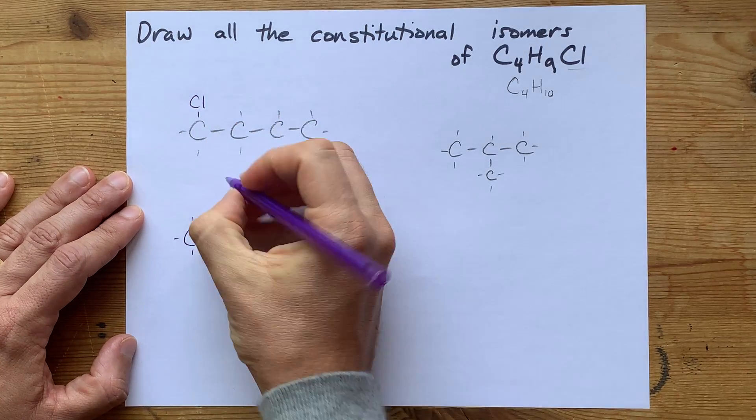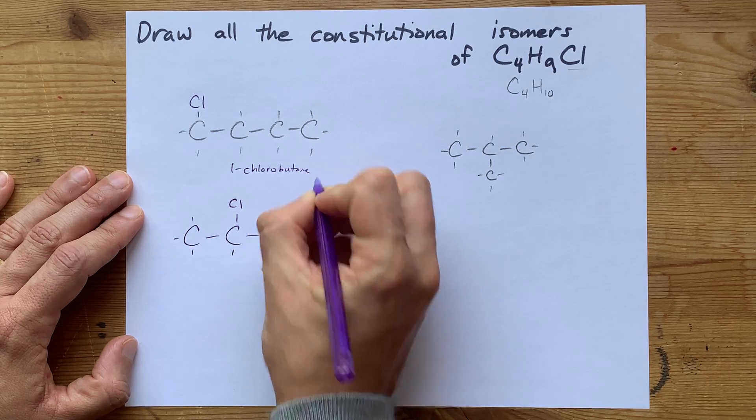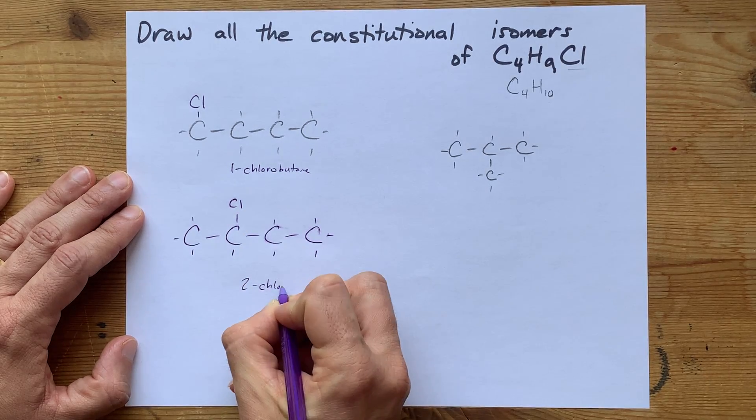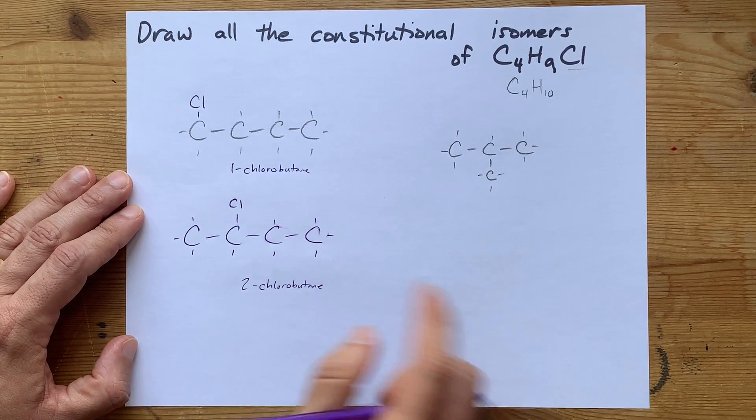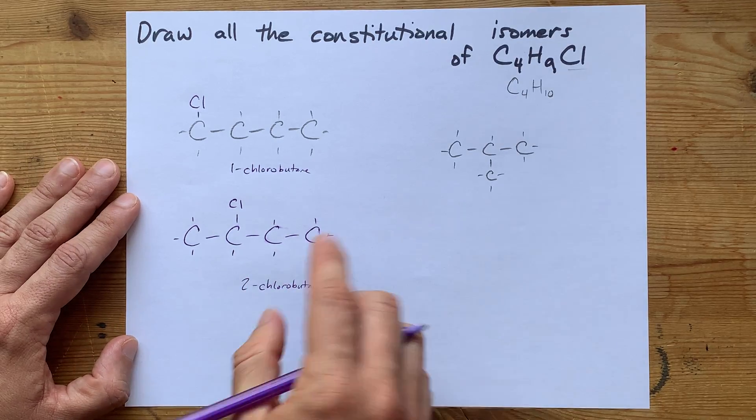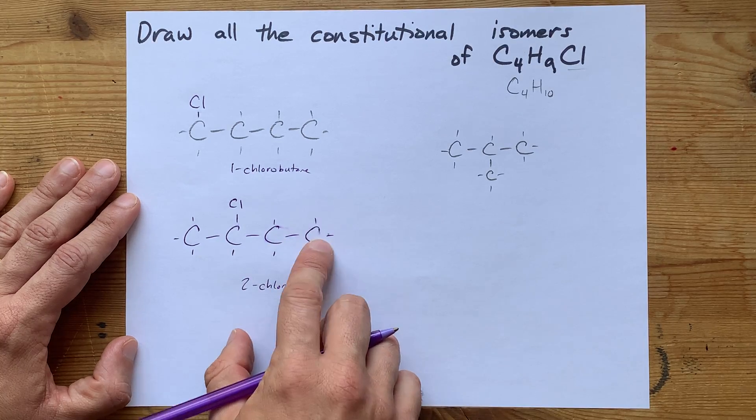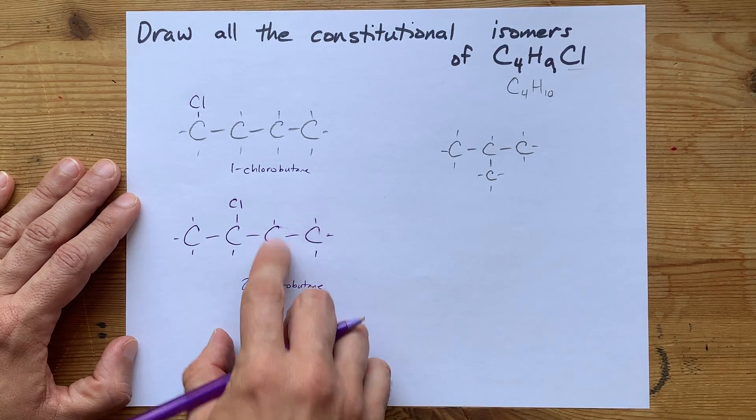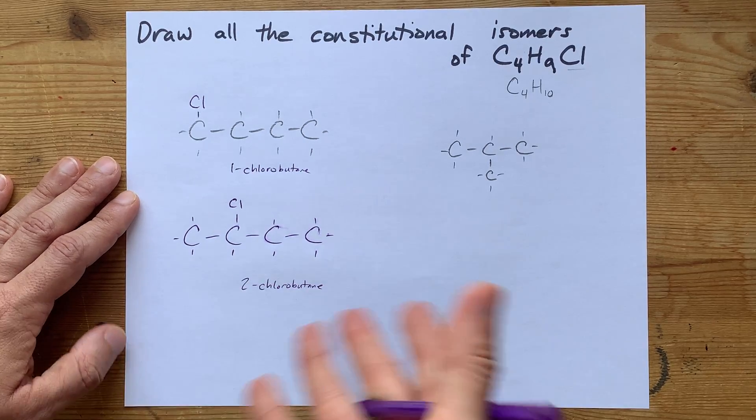Now these two are very different from each other. One of them is 1-chlorobutane and the other one is 2-chlorobutane. What about 3-chlorobutane, you ask? Well, if I put the Cl here on this carbon, then all of a sudden I have it closer to the other side. So I would be starting to count it from this side. That's 1, 2, oh, 3-chlorobutane is actually 2-chlorobutane when you named it wrong.